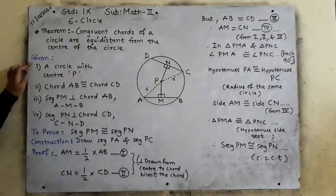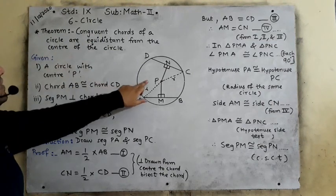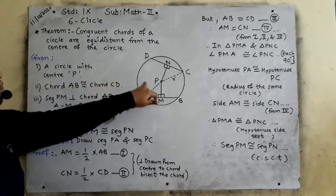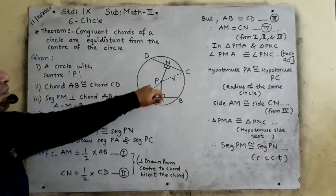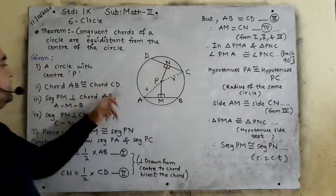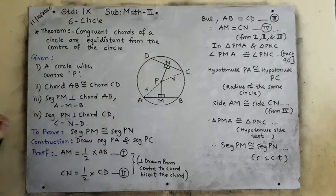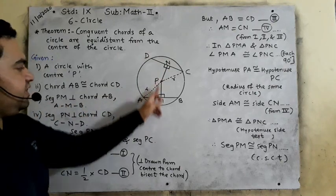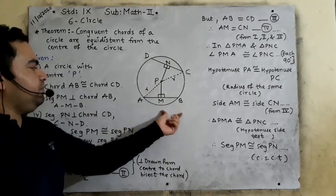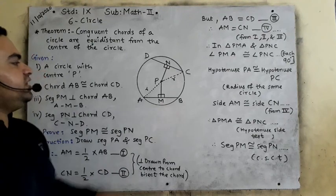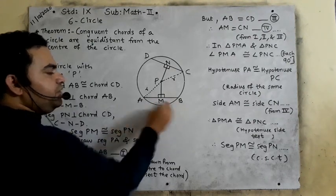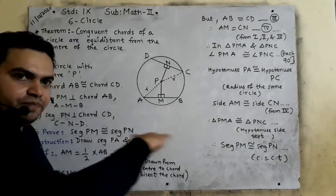Now see what is given in the question. We have a circle with center P. Chord AB is congruent to chord CD — it is given. Segment PM is perpendicular on chord AB. Therefore we can write A-M-B, meaning A, M, B are collinear points.